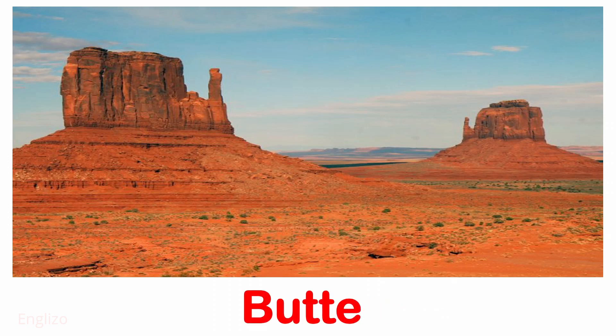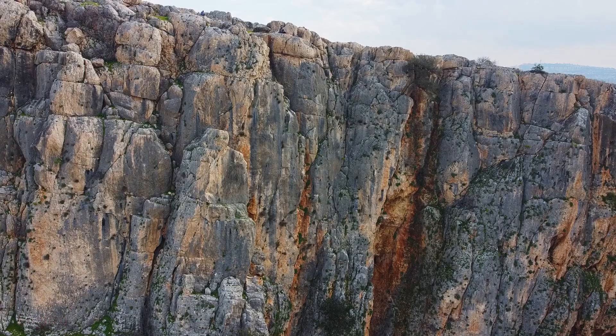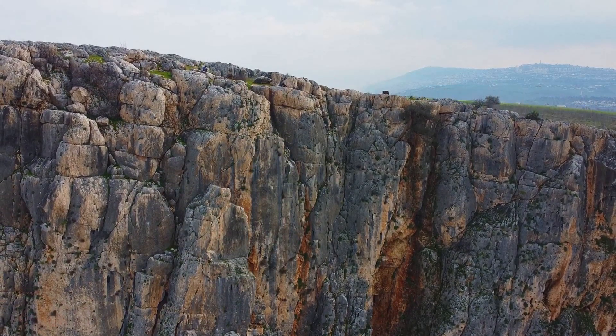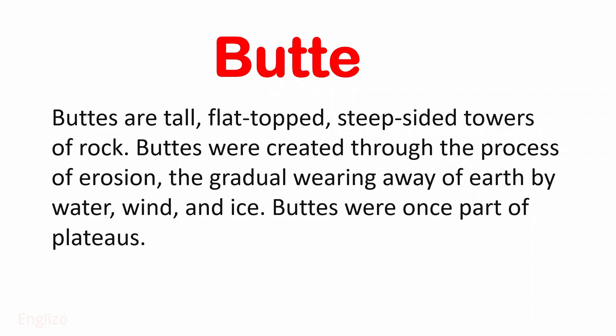Next is Butte. Buttes are tall, flat-topped, steep-sided towers of rock. They were created through the process of erosion that gradually wore away the earth by water, wind, and ice. Buttes were once part of plateaus.